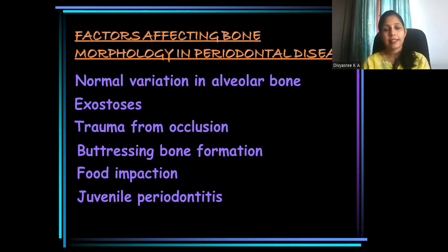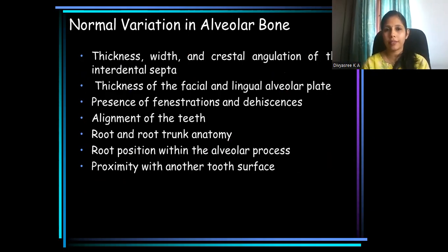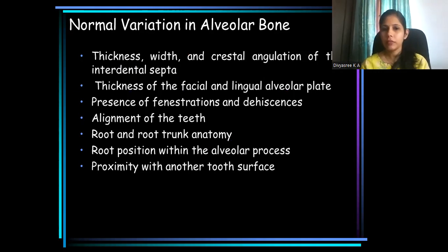A number of factors can affect bone destruction patterns in periodontal disease. Even normal variation in the alveolar bone can influence bone destruction. The thickness, width, and crestal angulation of interdental septa is different in different areas — different for maxilla and mandible, different for anterior and posterior regions. Then the thickness of the facial and lingual alveolar plates also plays a role.